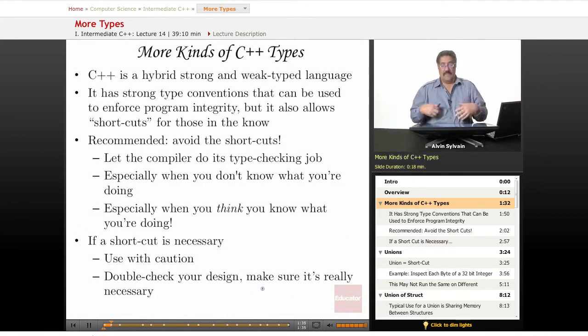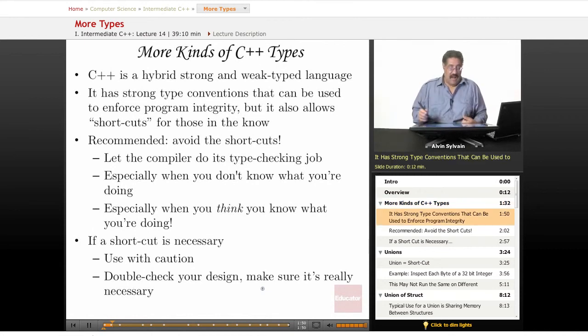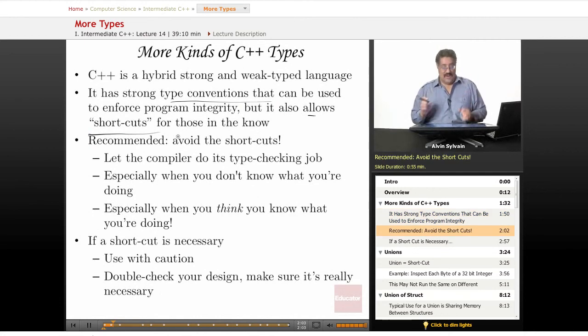We're going to talk about more kinds of C++ types. C++ is a hybrid - some folks say it's strongly typed, but not really. It's kind of a hybrid between strong type and weak type. It has some strong type conventions that you can use to let the compiler enforce type safety, but it allows some shortcuts for those in the know.